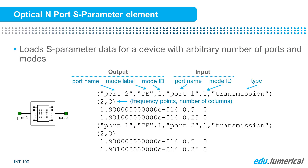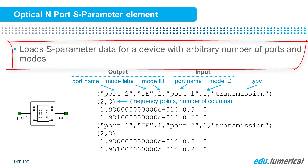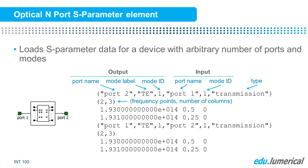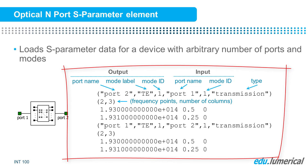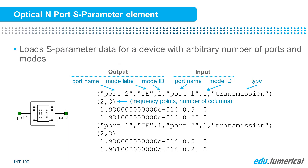The optical endpoint S-parameter element can be used to load S-parameter data for a device with an arbitrary number of ports and modes, making it one of the most commonly used S-parameter elements. This slide shows an example of the frequency-dependent S-parameters that can be loaded for an optical endpoint S-parameter element to represent a device with two ports and one mode supported in each port.